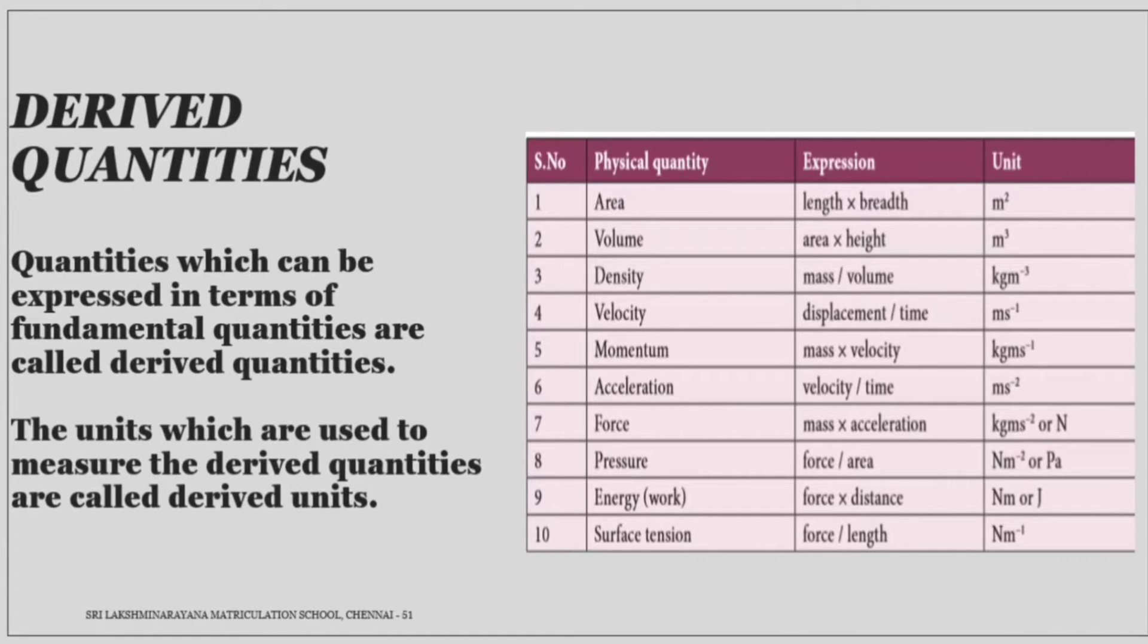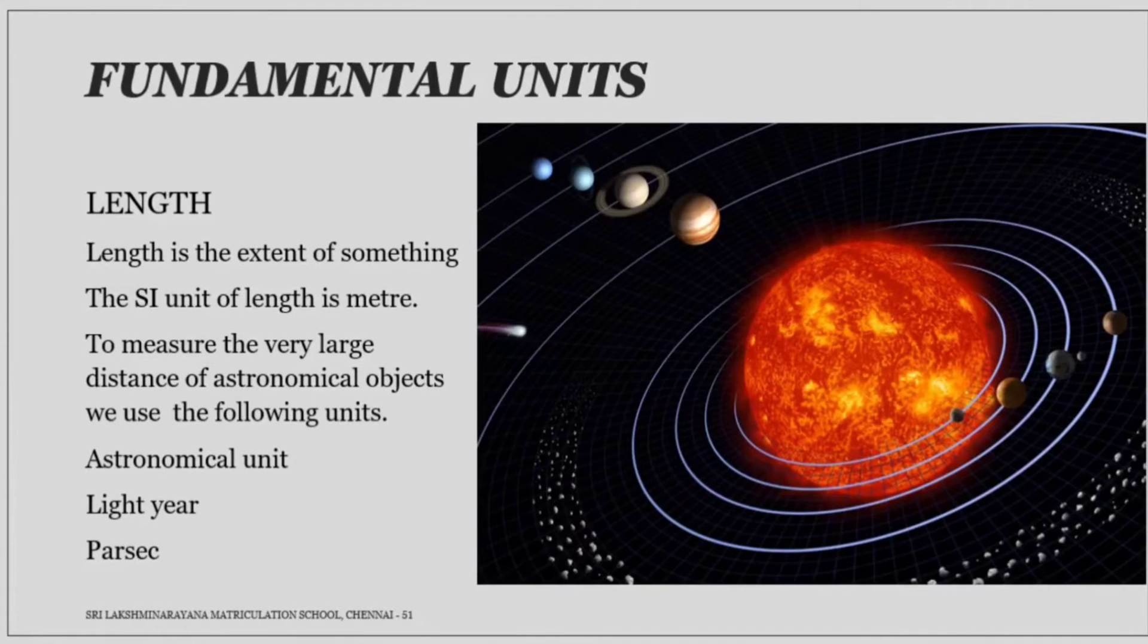Next topic is length. Length is the extent of something between two points. The SI unit of length is meter. To measure the very large distance of astronomical objects, we use the following units.